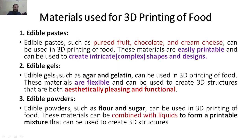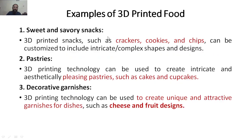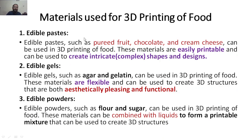There are edible pastes, edible gels, and edible powders used in 3D food printing. Edible pastes such as pureed fruit, chocolate, ice cream, and cheese can be used in 3D printing. These materials are easily printable and can be used to create intricate or complex shapes and designs — very innovative structures not seen before.